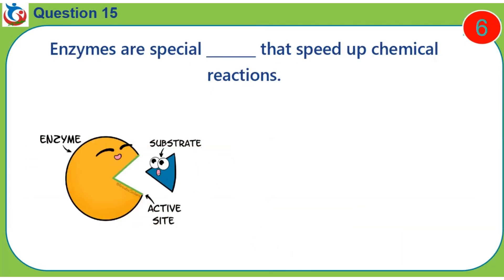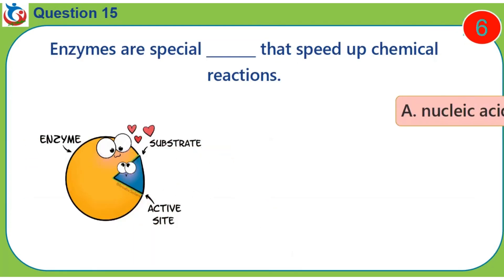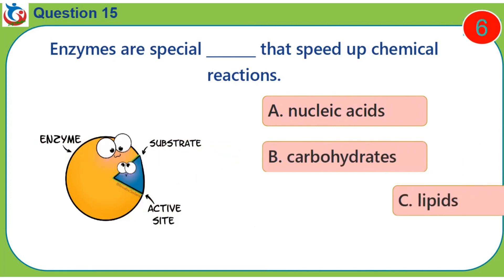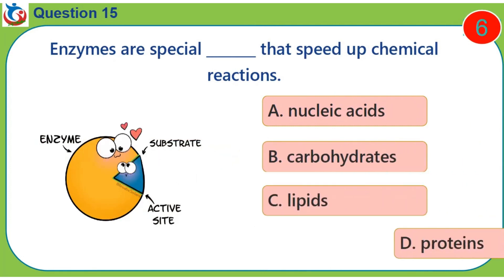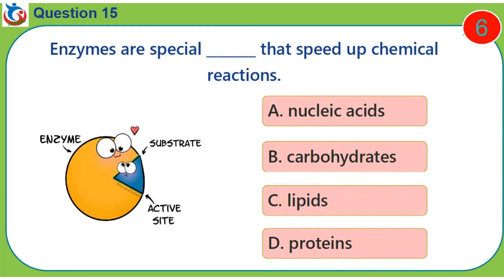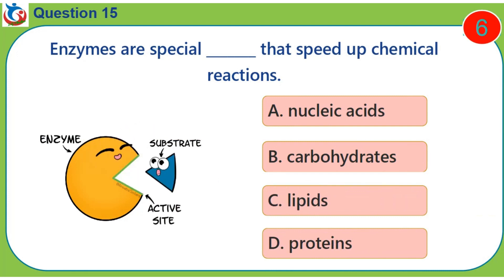Question 15. Enzymes are special dash that speed up chemical reactions. A. Nucleic acids. B. Carbohydrates. C. Lipids. D. Proteins.